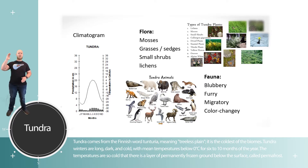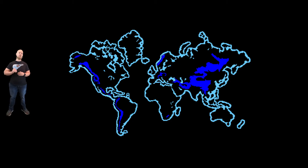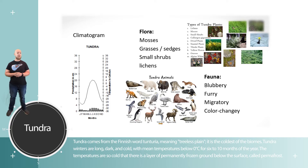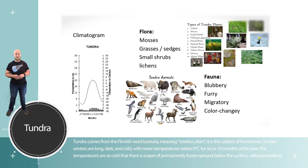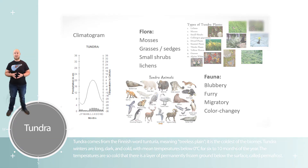The tundra biomes are found farthest north and south in the world, but tundra can also be found high in elevation on top of really tall mountains. The dominant plant community tends to be small, low-lying flowers, mosses, and lichens. As far as animals: things that are blubbery, things that are furry, things that migrate, and things that change color — for example, foxes living far north will change fur color from white to brownish and back to white for winter.